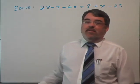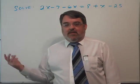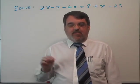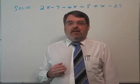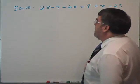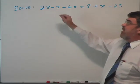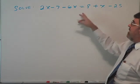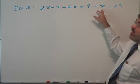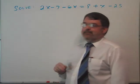And here we are. In these videos I'm going to read everything I write on the board here, just to make sure it's clearly legible as to what you're seeing. So this says to solve 2x minus 7 minus 6x equals 8 plus x minus 25.